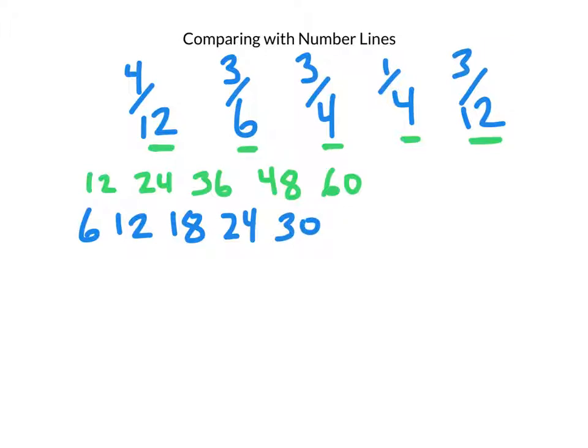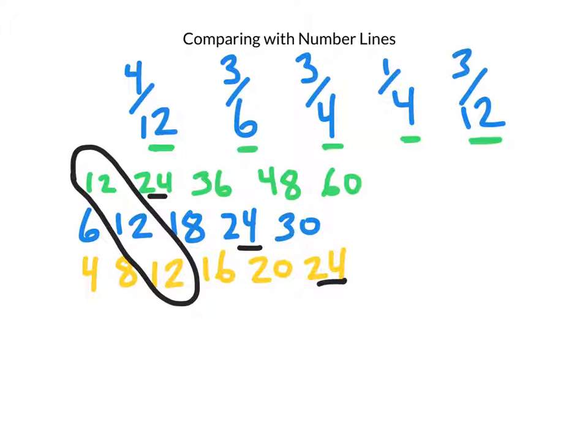And now I'll count by 4s because I also have denominators of 4: 4, 8, 12, 16, 20, 24. Is there a number they all share? Well, you're right if you say they all share 24. But there's a smaller number they all share: 12. They all share the number 12.